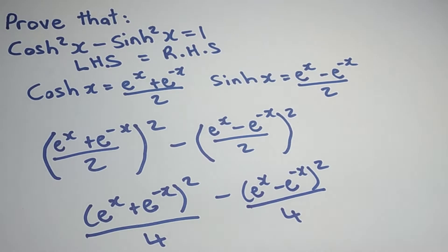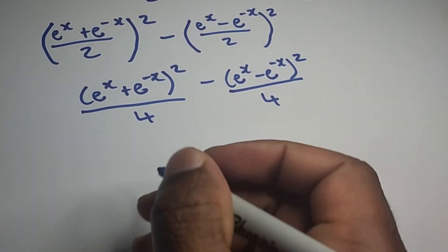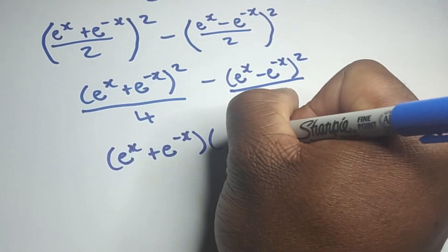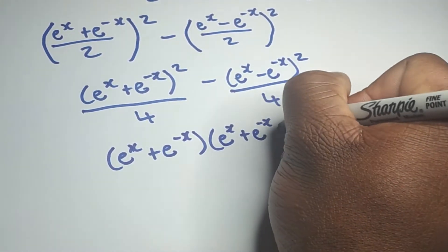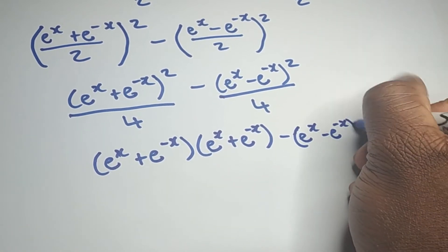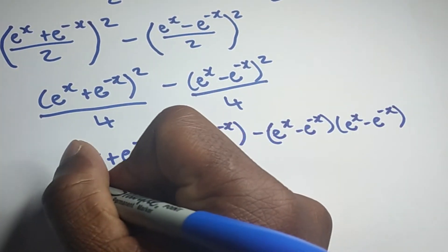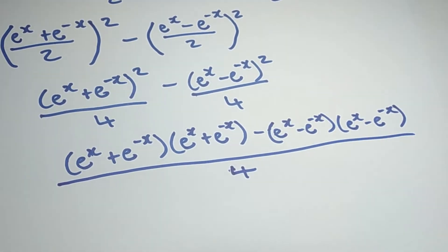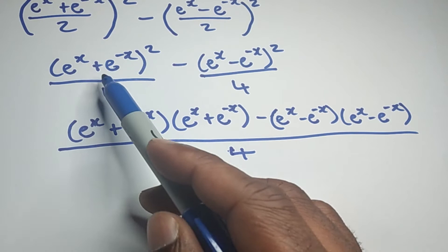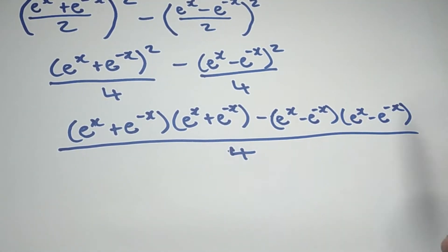Now we have common denominators, so we can put the numerators over the common denominator. We'll have e to the x plus e to the minus x, times e to the x plus e to the minus x, minus e to the x minus e to the minus x, times e to the x minus e to the minus x, all over 4. I simply expanded each squared bracket by multiplying it by itself.